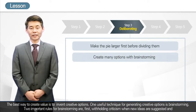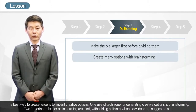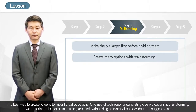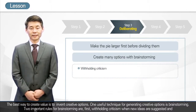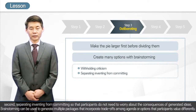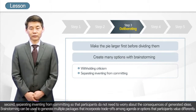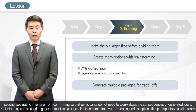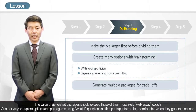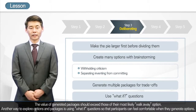The best way to create value is to invent creative options. One useful technique for generating creative options is brainstorming. Two important rules for brainstorming are: first, withholding criticism when new ideas are suggested; and second, separating inventing from committing so that participants do not need to worry about the consequences of generated ideas. Brainstorming can be used to generate multiple packages that incorporate trade-offs among agenda items or options that participants value differently, and another way to explore options is using what-if questions.